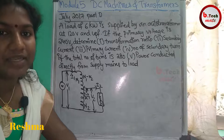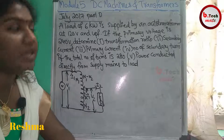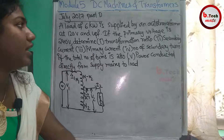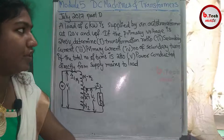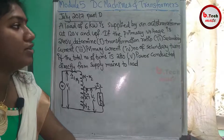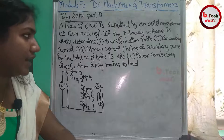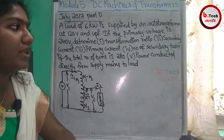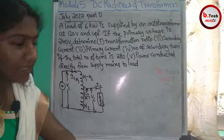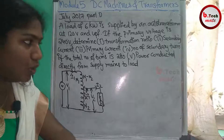We are going to talk about auto transformers. A load of 6 kW is supplied by an auto transformer at 120V and unity power factor. If the primary voltage is 240V, determine: first, the transformation ratio; second, secondary current; third, primary current; fourth, number of secondary turns, if the total number of turns is 280; and fifth, power conducted directly from supply mains to load.